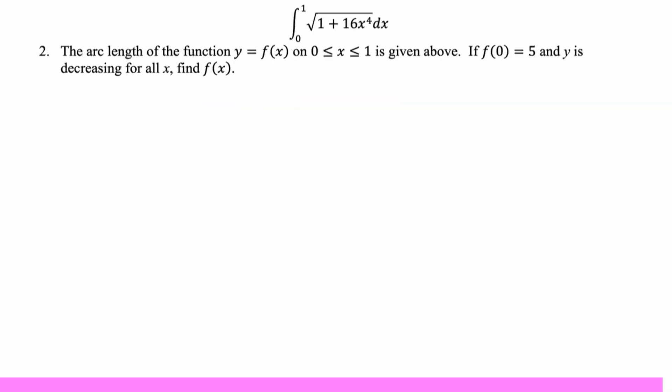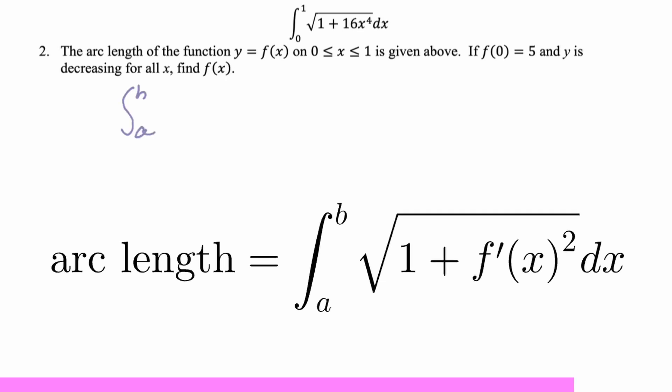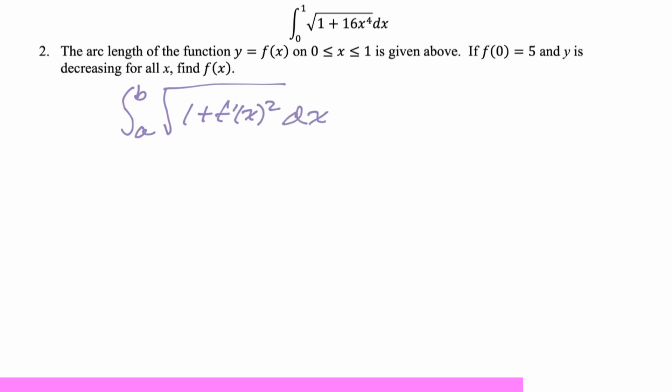The arc length of the function y equals f of x from zero to one is given above. If f of zero is five, and y is decreasing for all x, find f of x. Okay, so we just have to know what's going on with arc length. Arc length is integral from a to b squared one plus f prime squared dx. So there's not a lot going on with it. But from this and comparing, we can see that this thing 16x to the fourth is f prime squared.